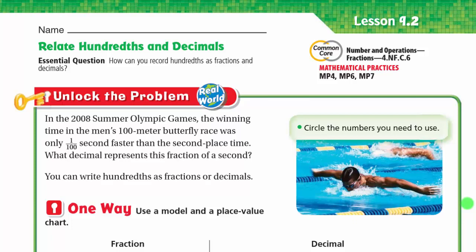Hello, this is Mr. Ahmed. Today we'll do lesson 9.2: Relate Hundredths and Decimals. Our essential question is: how can you record hundredths as fractions and decimals? In the past lesson, we learned how to write tenths as decimals — for example, two tenths equals 0.2. In today's lesson, we'll learn how to write hundredths as decimals.